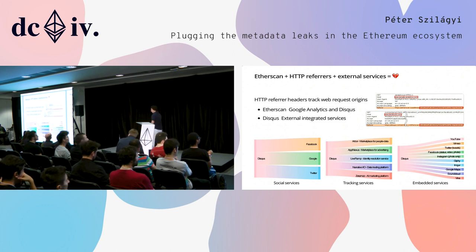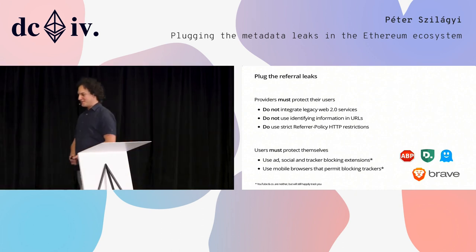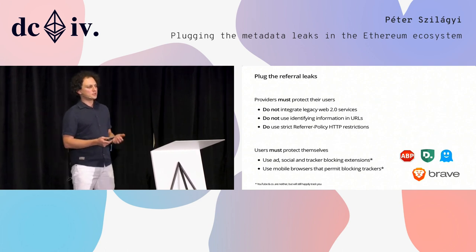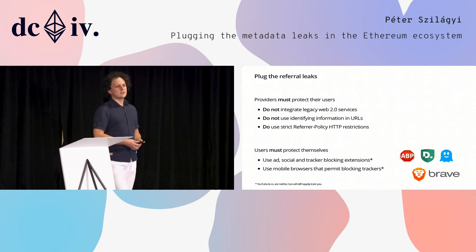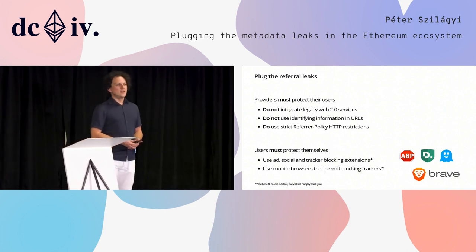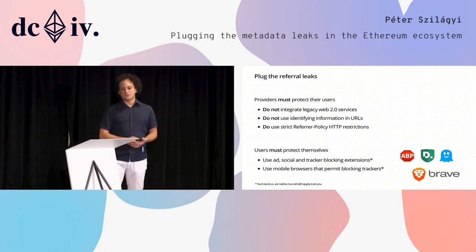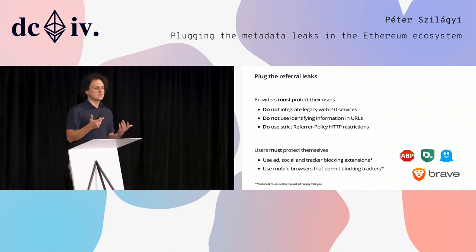Now we know there's a problem — but what can we do to fix it? One of the possibilities, if you're a provider — any kind of dApp or service provider — first up, do not integrate legacy Web 2.0 services. This might sound like a no-brainer, but if you think about it, Etherscan has this possibility to comment on accounts. Is that genuinely a useful feature for a block explorer? If you look through the comments, it's pretty noisy, pretty spammy, there are a few scams going on, so it's not the best feature. Maybe it would be worth cutting it out. The second thing is: even if you don't integrate external services, you should always wonder whether it is worthwhile to reveal identifying information in the URL — whether anyone who can access the IP-to-URL mapping should be able to see your customer's data.